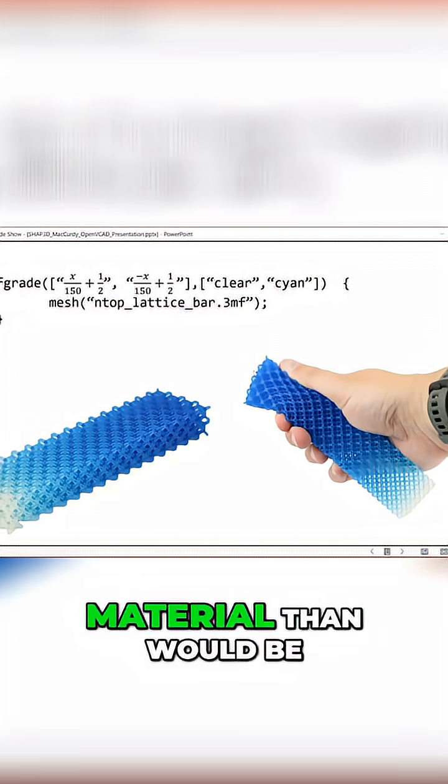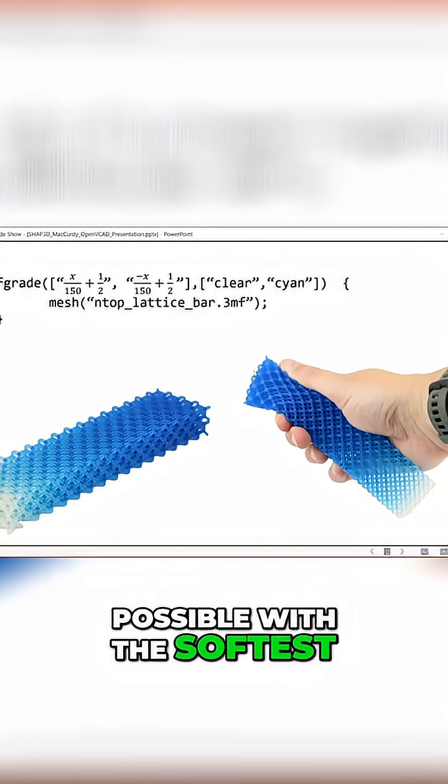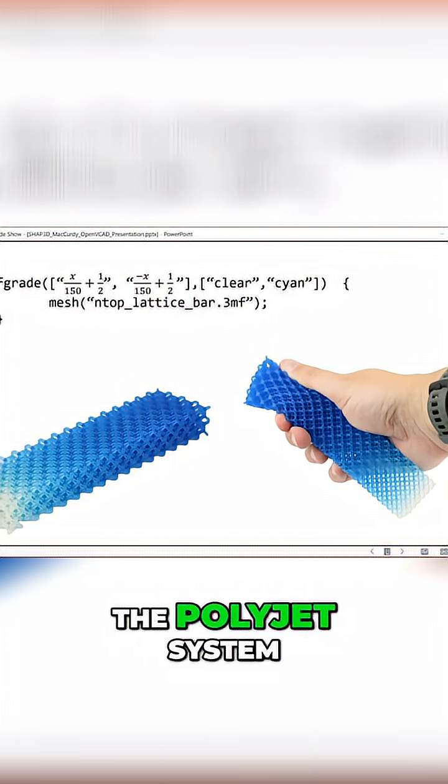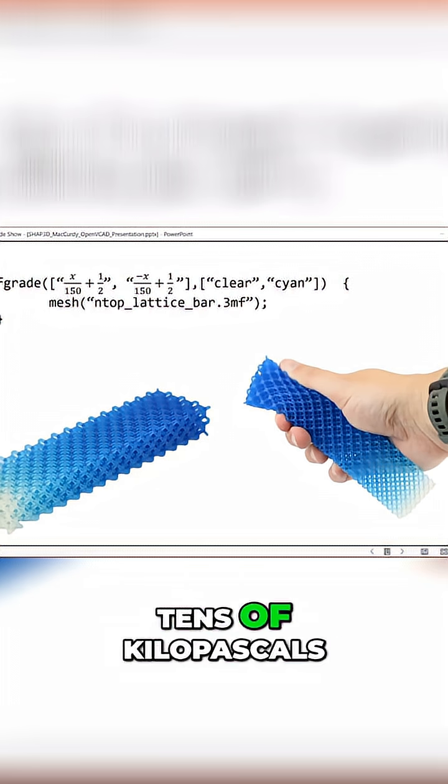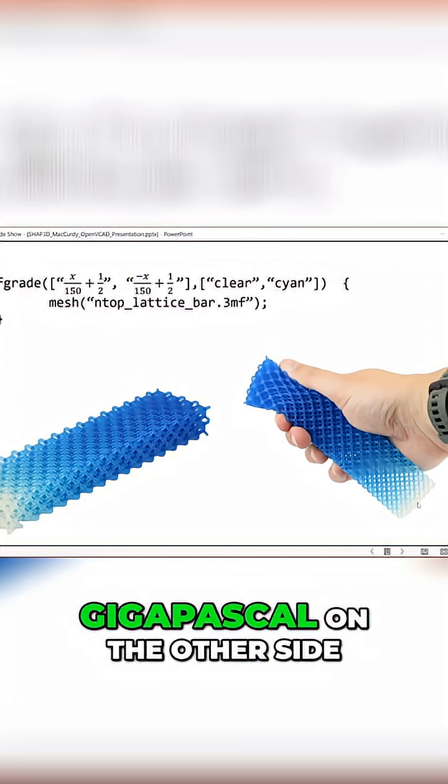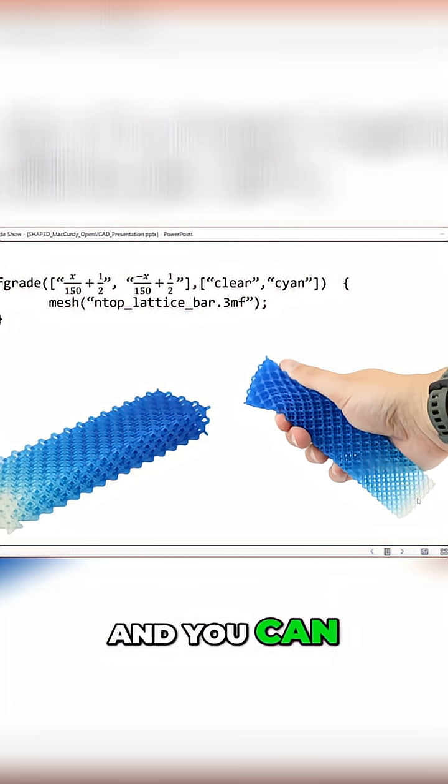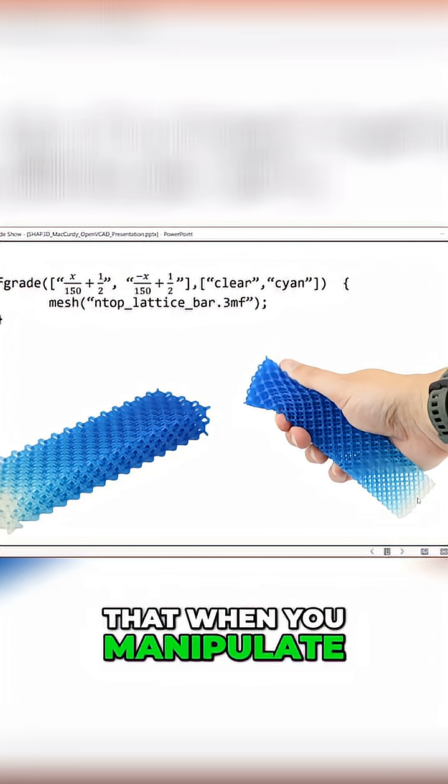So we can get far softer material than would be possible with the softest base materials in the PolyJet system. And so this thing ranges from tens of kilopascals all the way up to almost a gigapascal on the other side. And you can really tangibly feel that when you manipulate it.